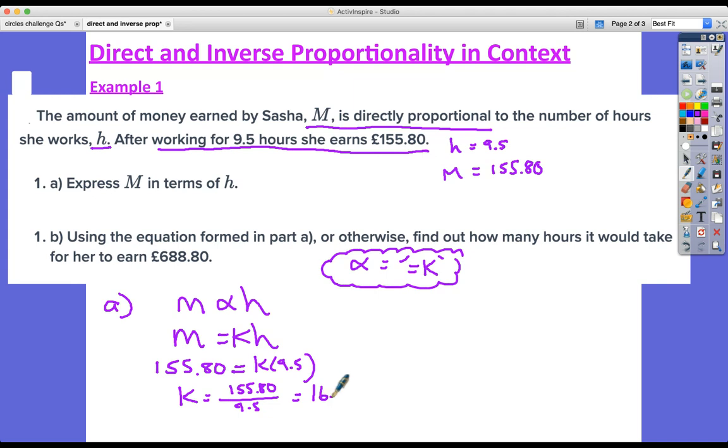So I'm sure you beat me to it there. 16.4 is the value of k. So we haven't finished yet, we've got this sort of halfway point there. And now we've found what k is, so we can write it all together: M equals 16.4h. And that's the equation that links M and h. Express M in terms of h, there we go.